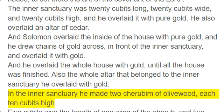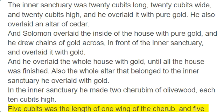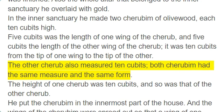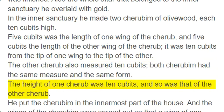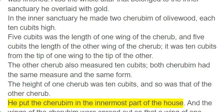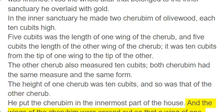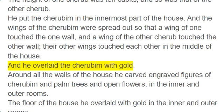In the inner sanctuary he made two cherubim of olive wood, each 10 cubits high. Five cubits was the length of one wing of the cherub, and 5 cubits the length of the other wing, making it 10 cubits from the tip of one wing to the tip of the other. Both cherubim had the same measure and the same form, each 10 cubits high. He put the cherubim in the innermost part of the house. The wings of the cherubim were spread out so that a wing of one touched the one wall, and a wing of the other cherub touched the other wall, their other wings touching each other in the middle of the house. And he overlaid the cherubim with gold.